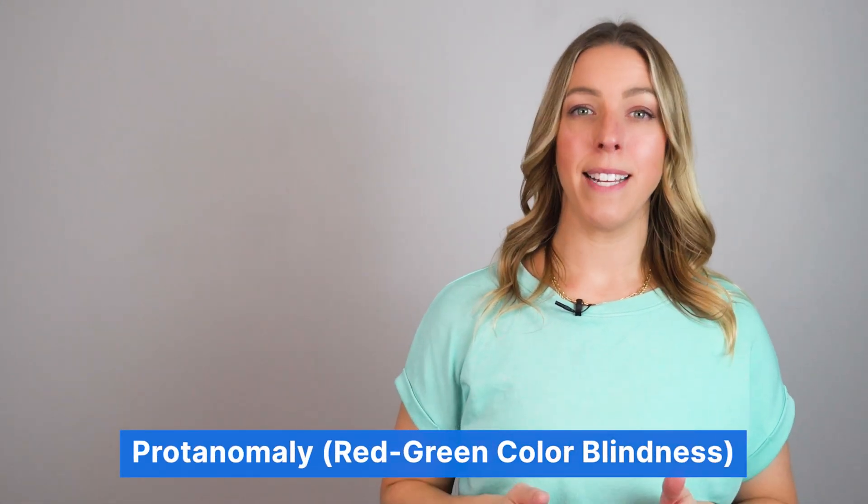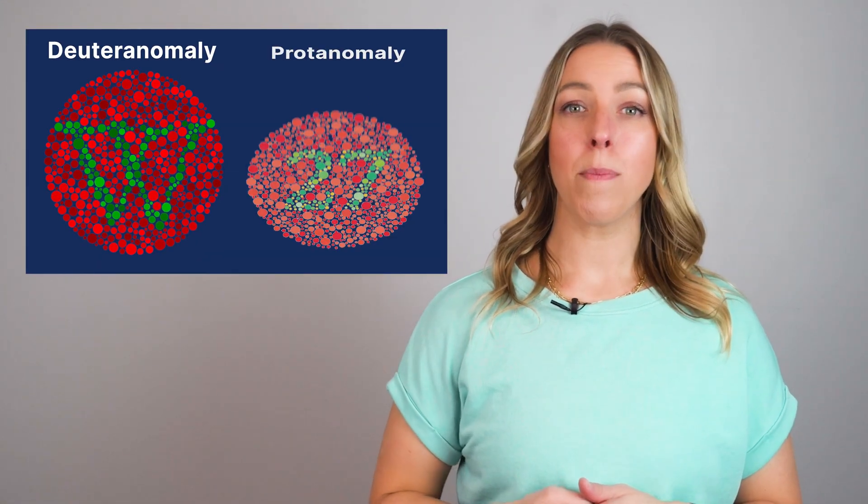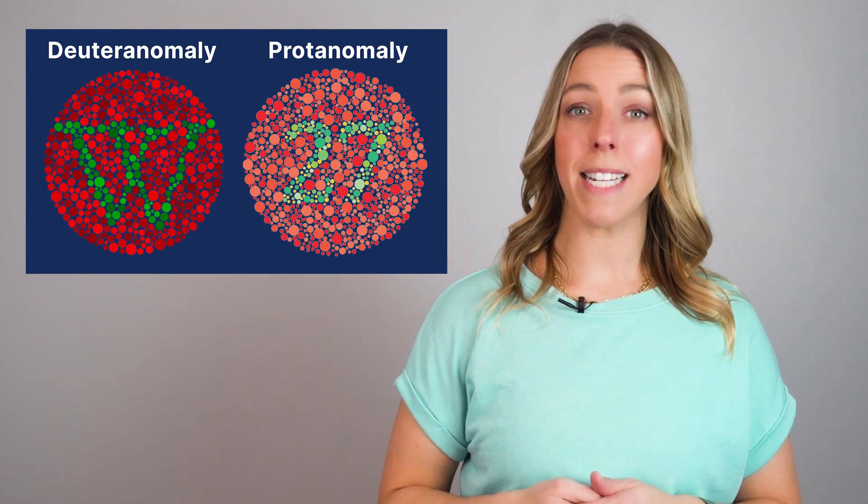Second, protanomaly. Similar to deuteranomaly, protanomaly also affects the red-green color perception. In this case, the red photoreceptor is affected. Individuals with protanomaly have difficulty differentiating between red and green colors.